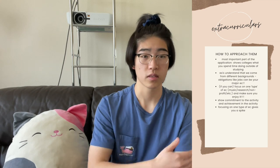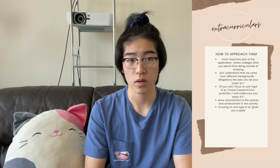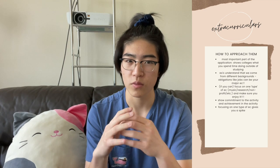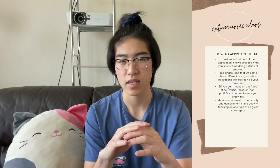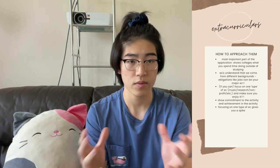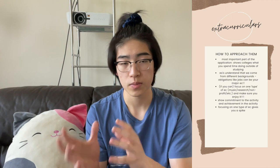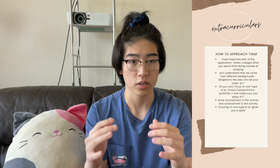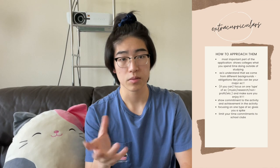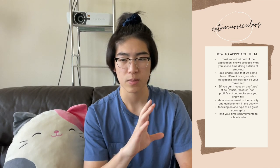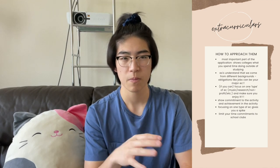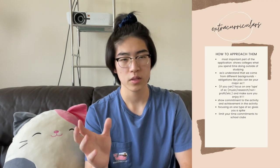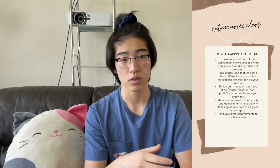Colleges really do want students with a spike rather than well-rounded students. Because if colleges pick a lot of well-rounded students, they're just going to have a class that's pretty average at everything. But if they choose students with a spike, they can piece together the students they want to make a really good class. As for school clubs, they're great, but I would suggest keeping it to two or three, because what really makes you stand out is what you do outside of school.